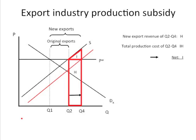I should note that export subsidies are still allowed in agricultural products, but as I said earlier, they're not allowed in the case of manufactured goods.